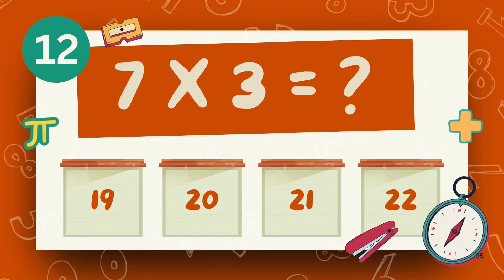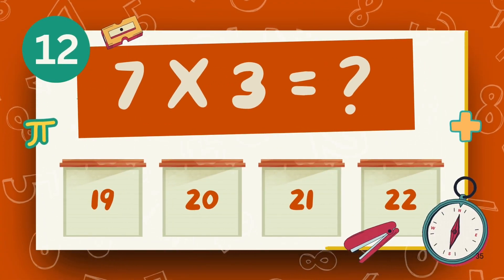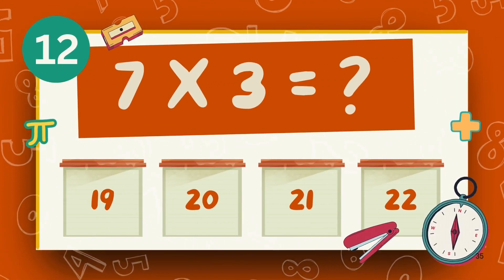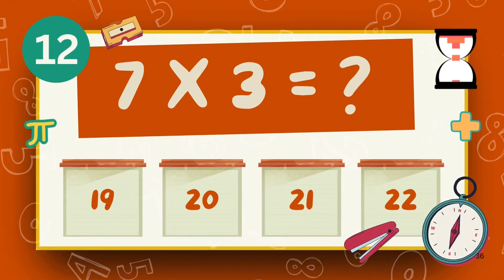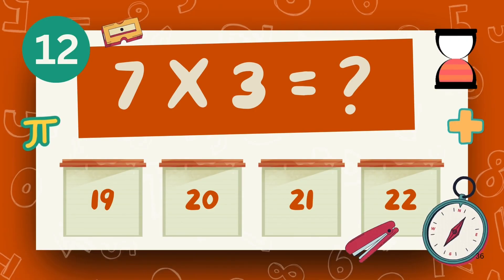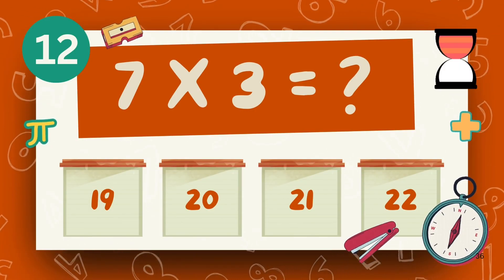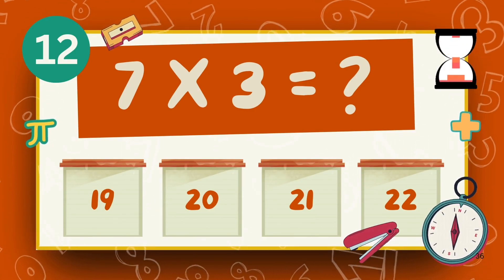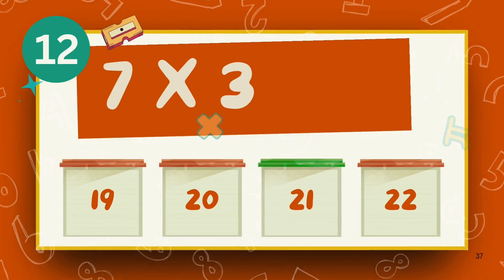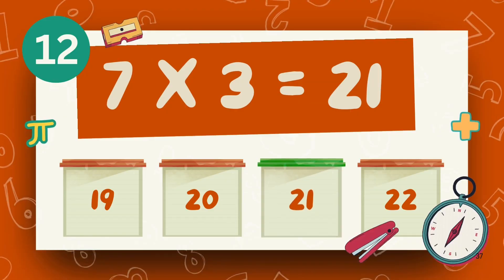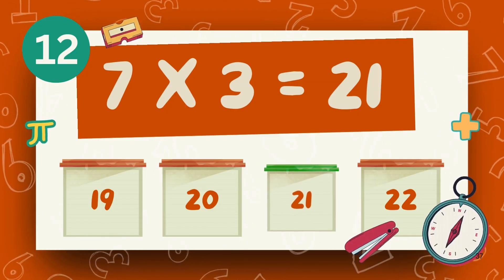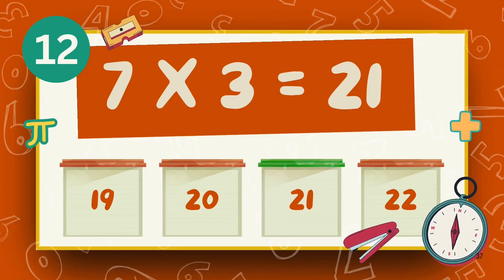What is 7 times 3? What is 6 times 3? The answer is 21.